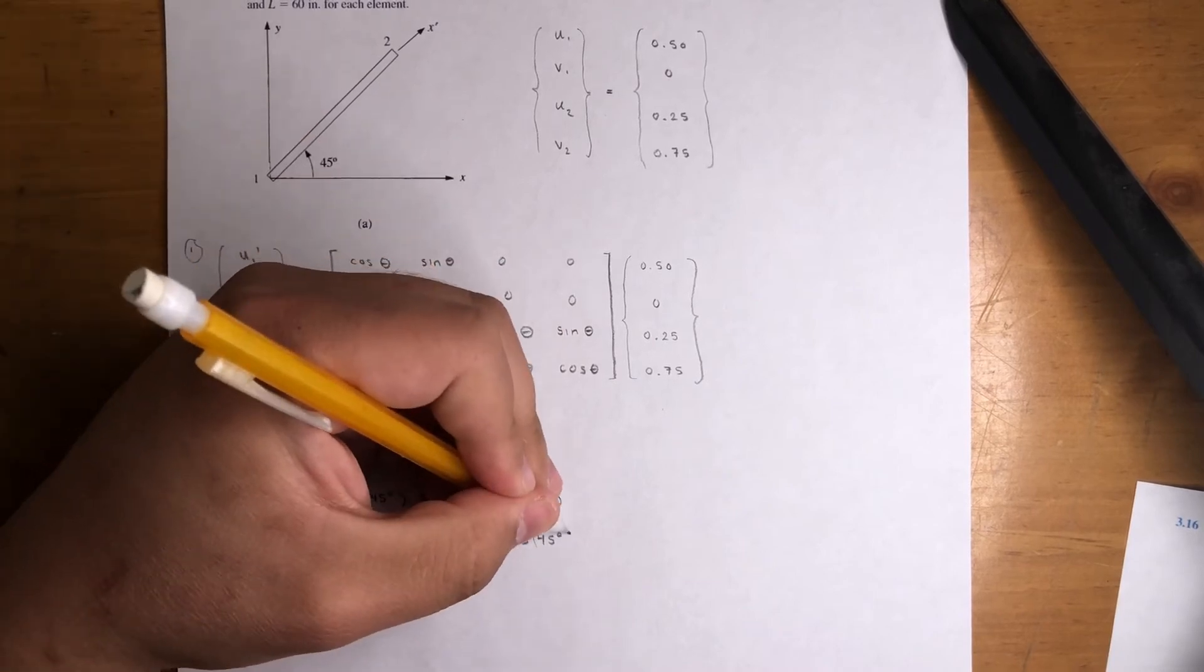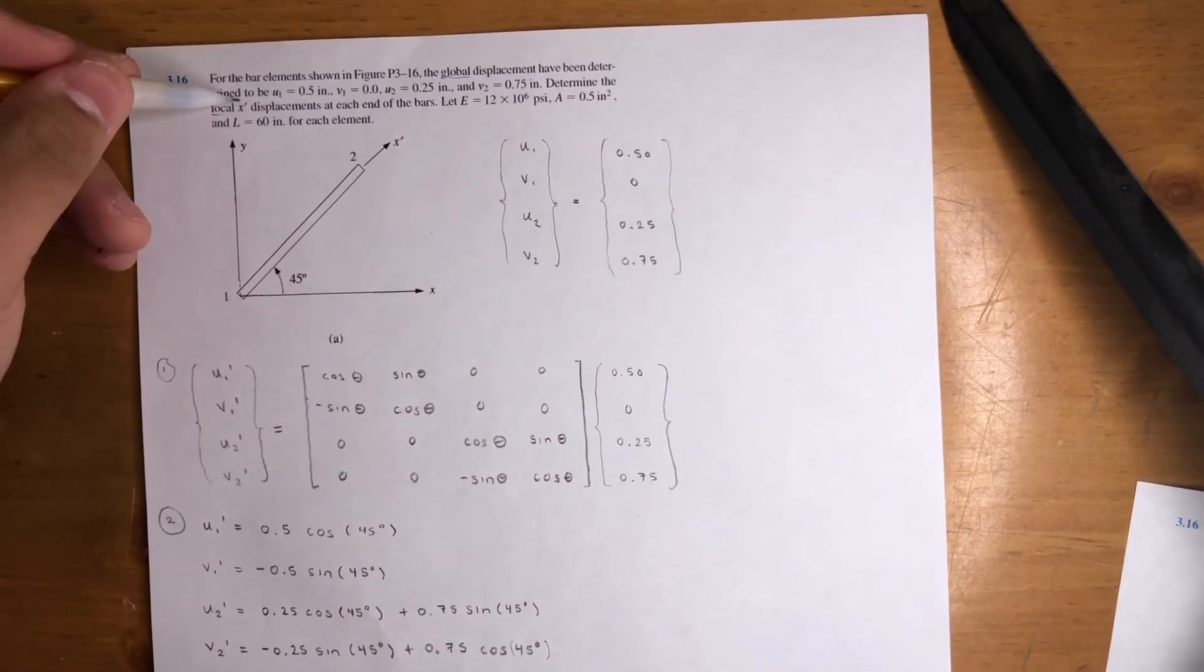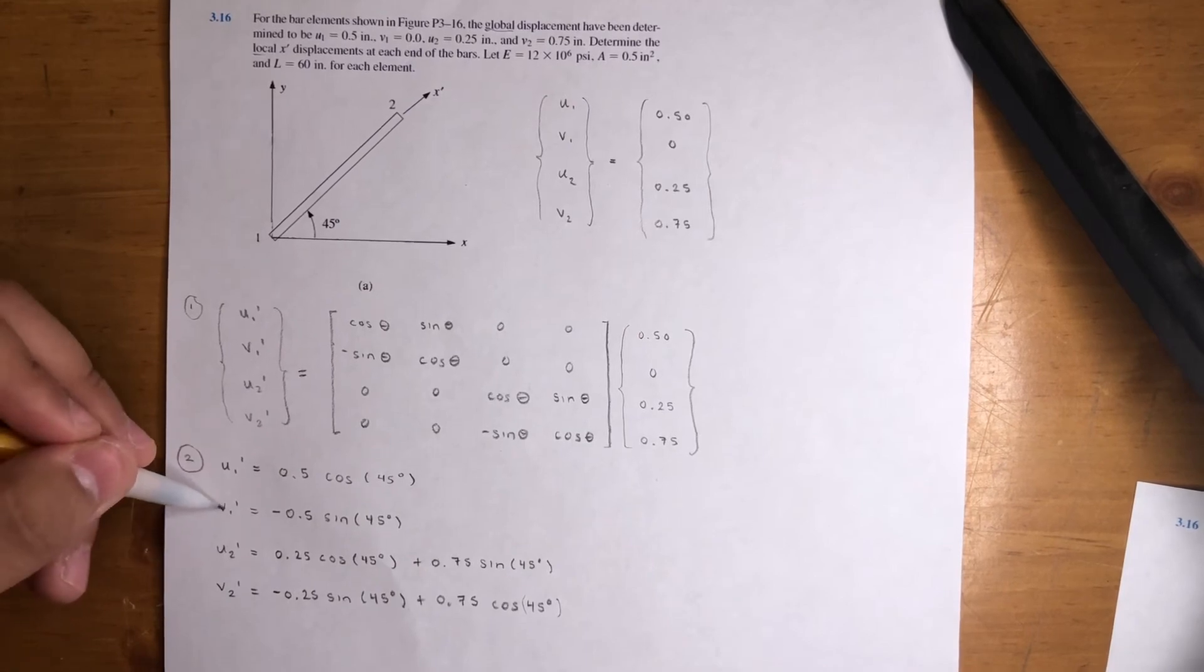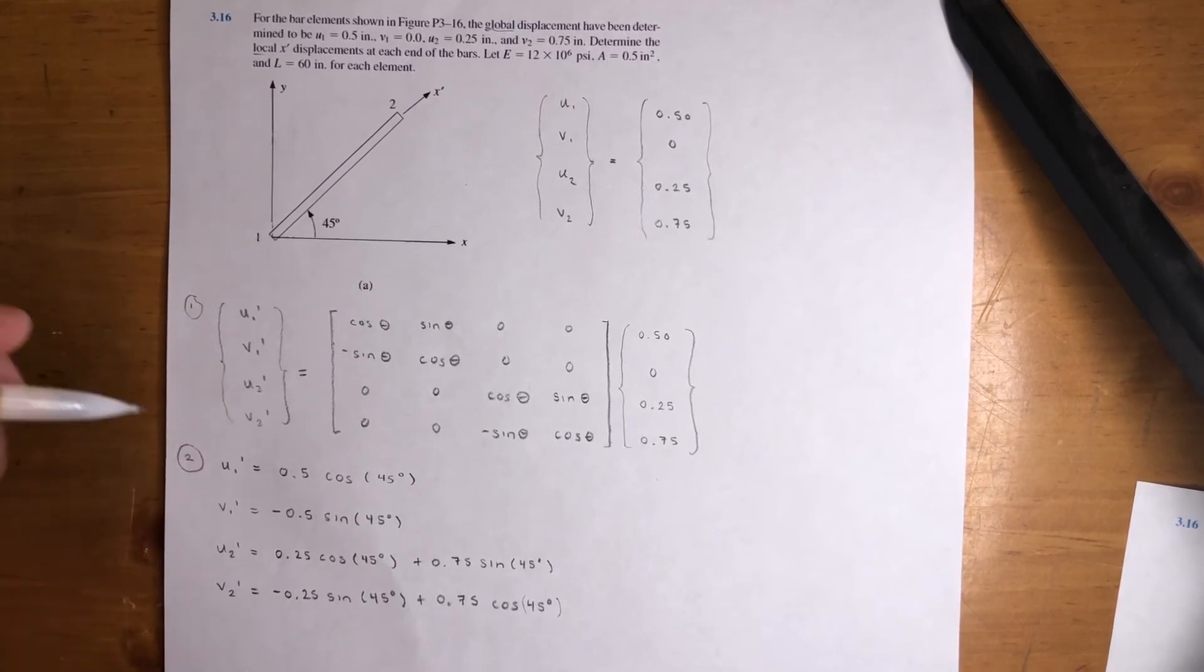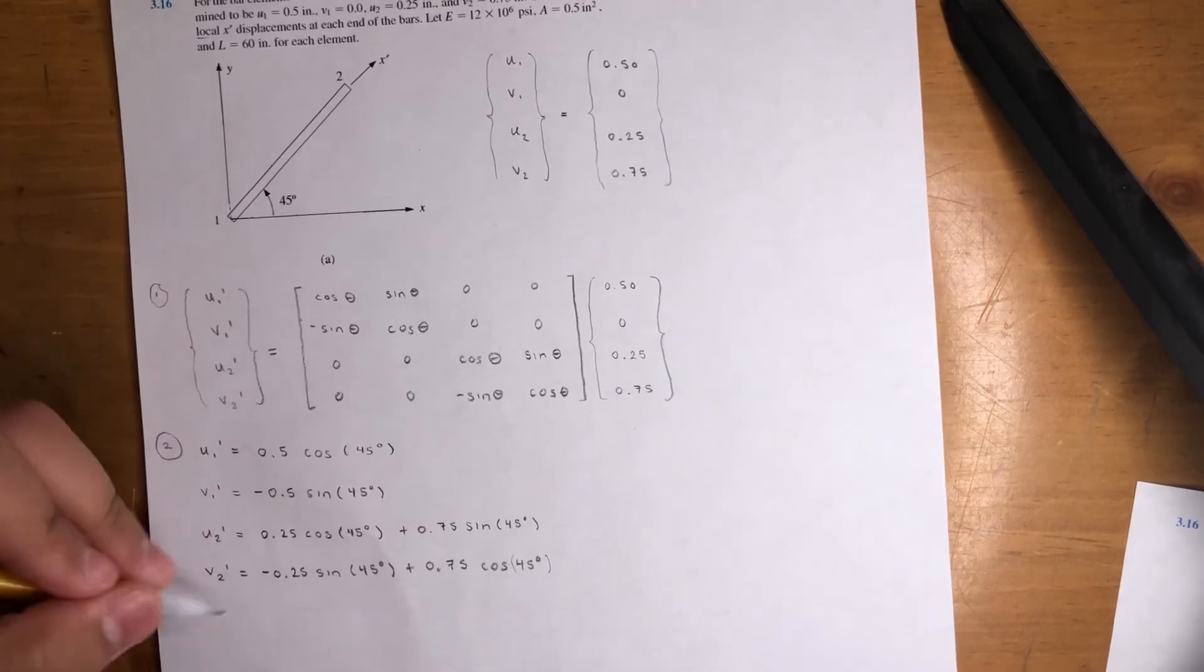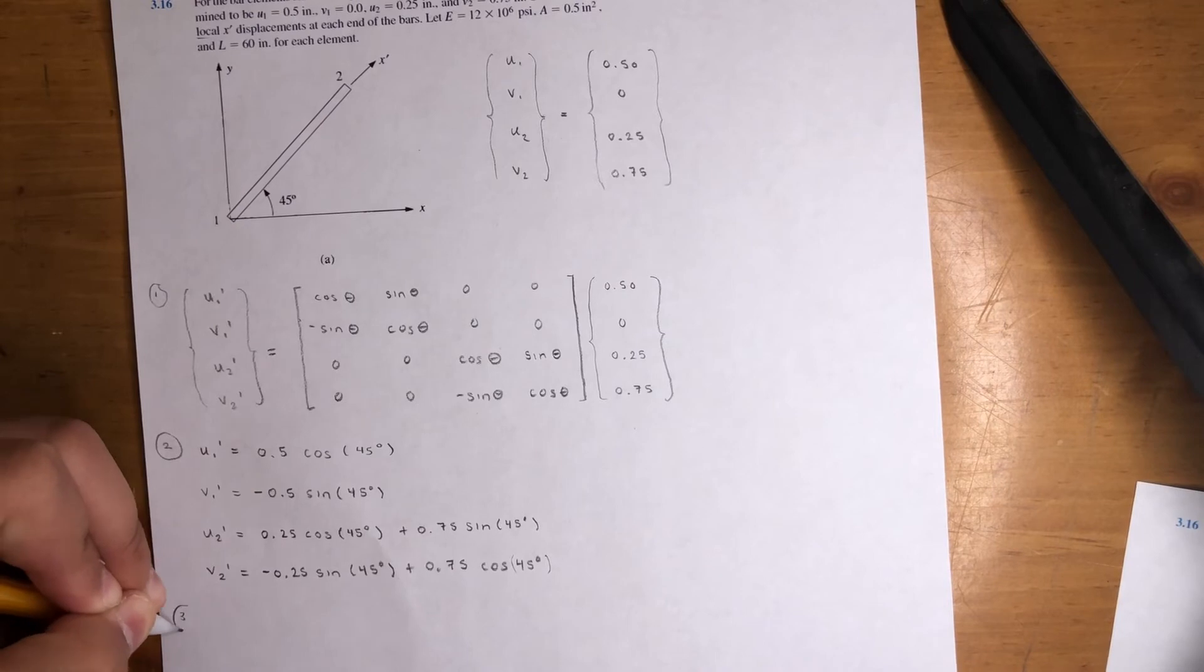And it's only asking for the local X displacements. So that means we only care about U1 prime and U2 prime. But we're also getting V1 prime and V2 prime in this case. Just so you could see how you get all four. And it's pretty straightforward. And we're pretty much done with the problem.